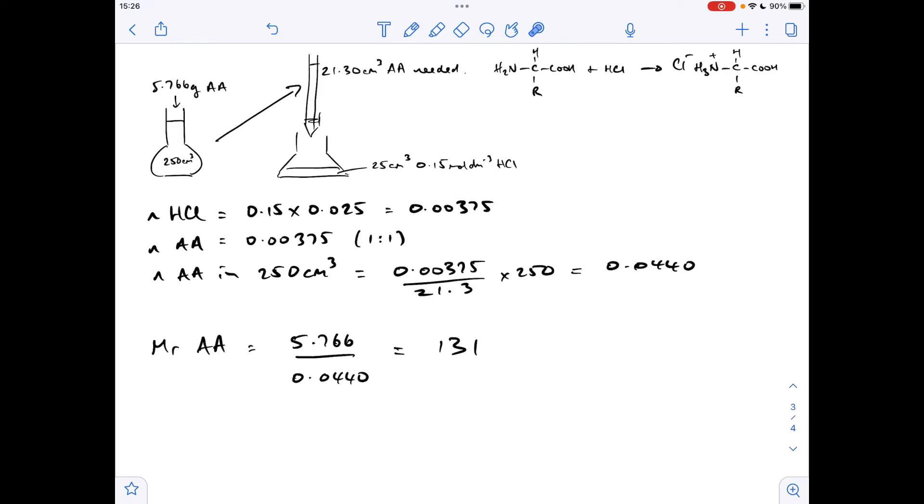So to get the MR of the amino acid, it's mass over moles. So that's coming out at 131. To find the MR of the R group and obviously identify it, we need to subtract the MR of the common part of an alpha amino acid, which is this bit here. So that's 74 for that. So that means the MR of the R group is 57.